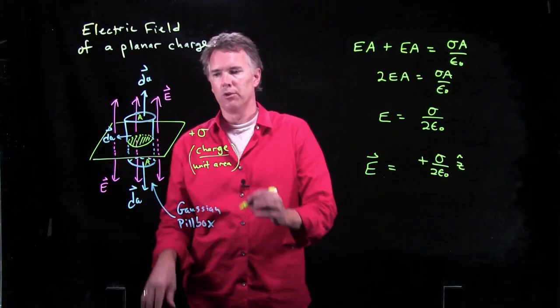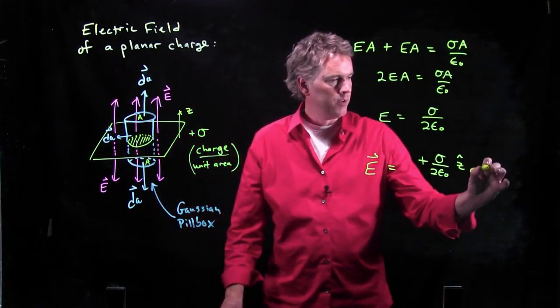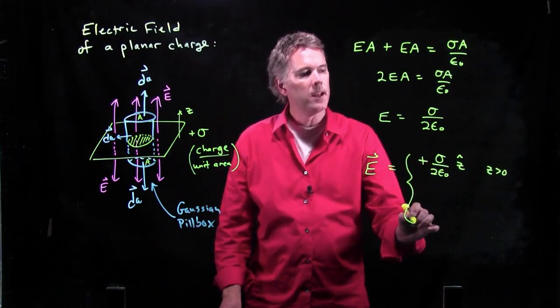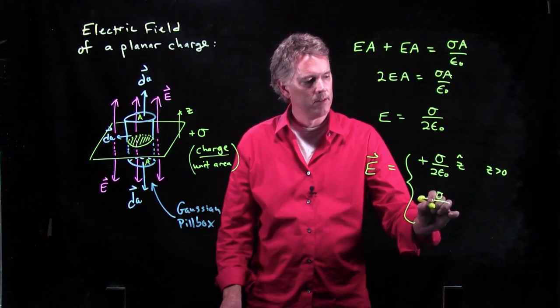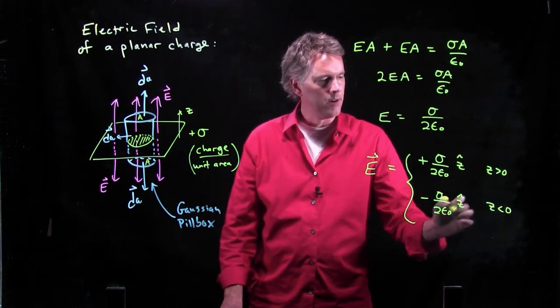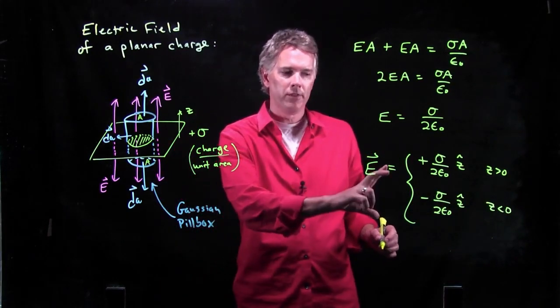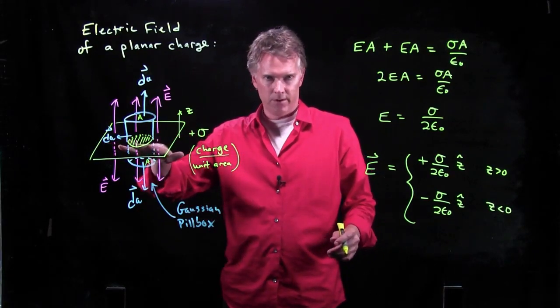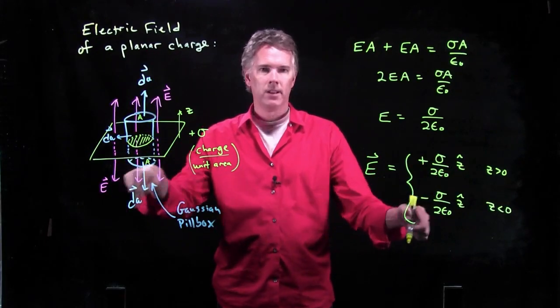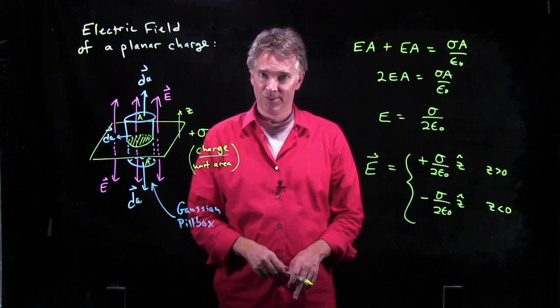Okay? If z is the vertical direction, then we're going to say it's positive if z is bigger than 0. It is negative if z is less than 0. And this is how you write the electric field of a plane of charge. It's either positive or negative if you're below. All right? Hopefully that's clear. Cheers.